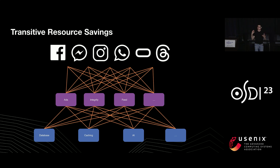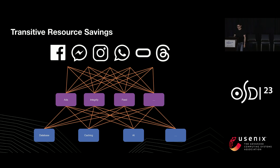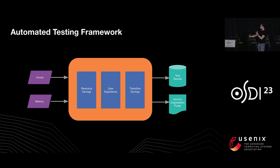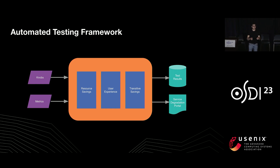Our microservice architecture has a complex net of transitive dependencies, so we needed a way to reason about how degrading one service would trickle down into resource savings for other dependent services. To address both challenges, we developed an automated testing framework that takes knobs and metrics as input, and periodically enables each knob for a small fraction of users across our entire app ecosystem, measuring how much resources change. It stores test results for later analysis and provides actionable insights to product teams about the knobs they've defined.